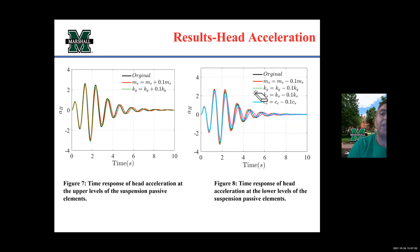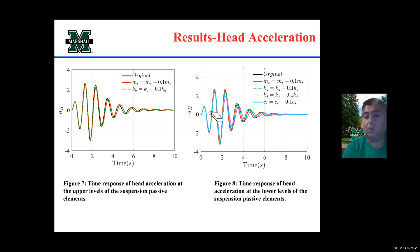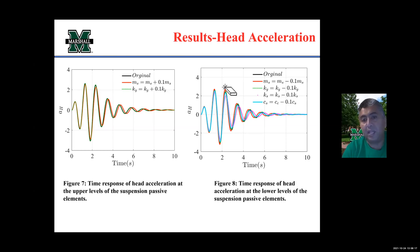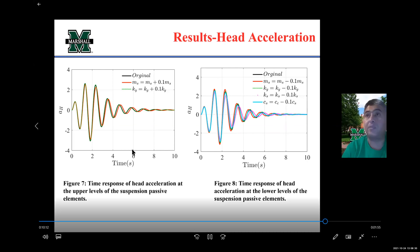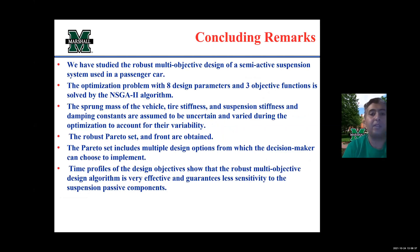Looking at the impact on head acceleration across the four uncertain parameter cases, in all cases the system is robust with only a little variation. In most responses, the head acceleration is actually smaller than the original, which is favorable — except when MS is decreased by 10%, in which case the head acceleration goes slightly up. However, the variation is still very small. The robust multi-objective optimization was very successful because we accounted for variation in the design parameters during the optimization process.